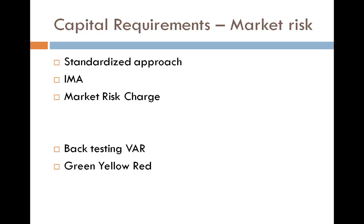Based on the number of exceptions, the bank's exposure is categorized into three zones and the VaR is scaled up by appropriate factors. The green zone consists of 0 to 4 exceptions. The yellow zone consists of 5 to 9 exceptions, where the multiplier begins to increase incrementally.